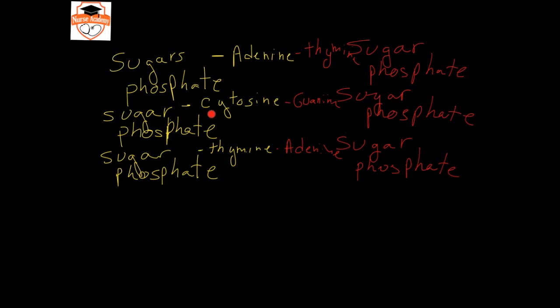Adenine, thymine, cytosine, and guanine actually make up the alphabet of the genetic code, so to speak.